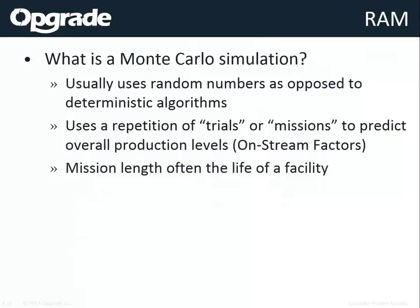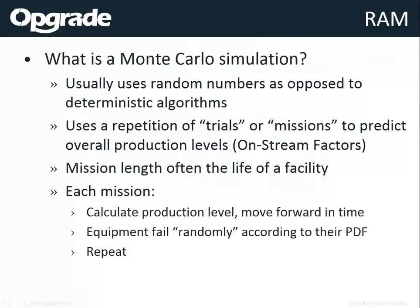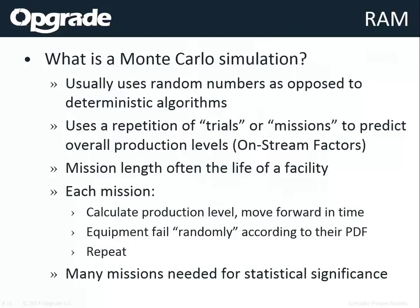The mission length is often the life cycle of the facility. The simulation calculates production, moves forward in time, causes failures based on random numbers fitted to a particular failure distribution, determines the effect on the system, calculates the production level, and moves forward in time until that item is restored or something else fails. You need many missions or trials to get a statistically significant sample size.